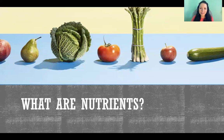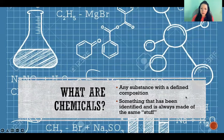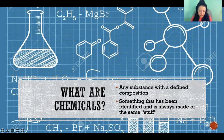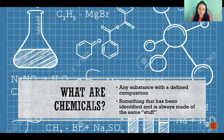Hello. In this video, I'm going to answer the question: what are nutrients? So first, we need to talk about what a chemical is in chemistry terms. In chemistry, a chemical is any substance with a defined composition — something that we've identified that is always made of the same stuff. That's a chemical.